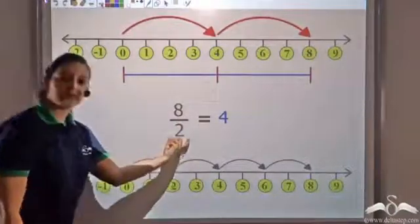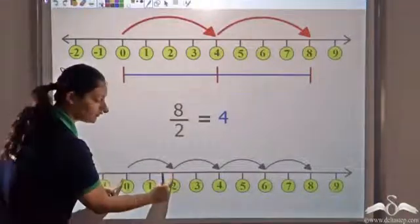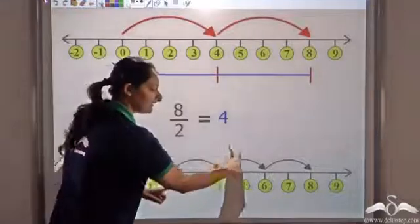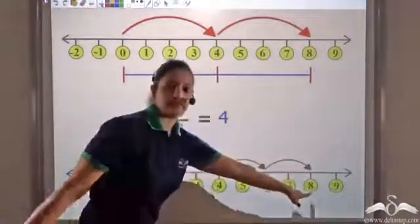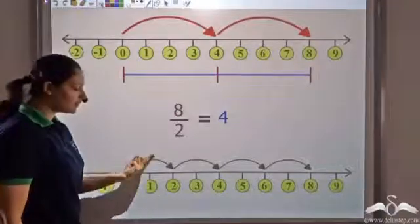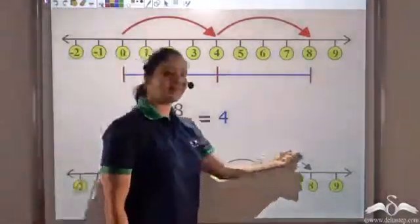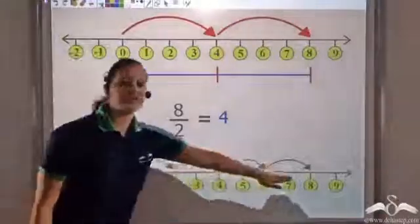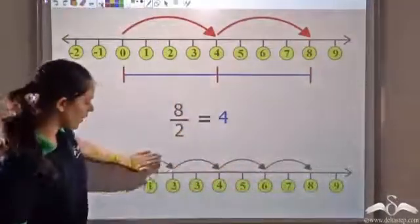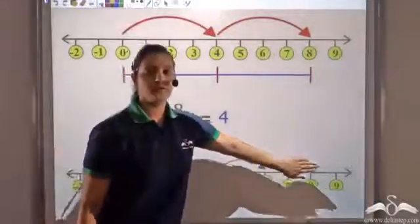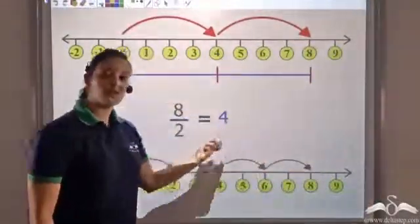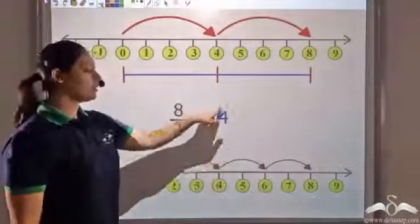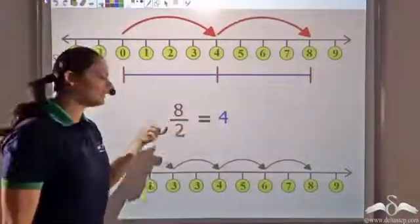Starting with a length of two, I jump in intervals of two, starting from zero, until I reach eight. I see that four twos fit evenly into eight — one, two, three, four. And that is what this four tells me: eight divided by two equals four.